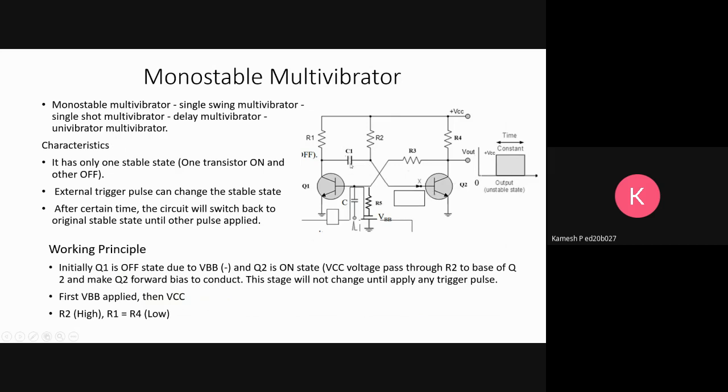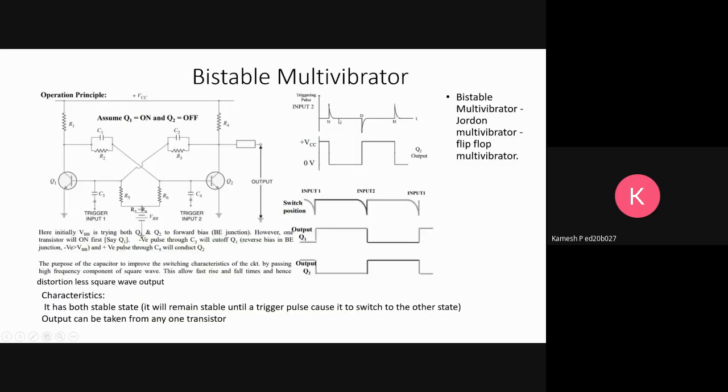The working principle of multivibrators typically won't be asked in exams, but the circuit diagram and output diagram are very important. Bistable multivibrator is also called Jordan multivibrator and flip-flop multivibrator. Its characteristics: it has both stable states and will remain stable until a trigger pulse switches it to another state.